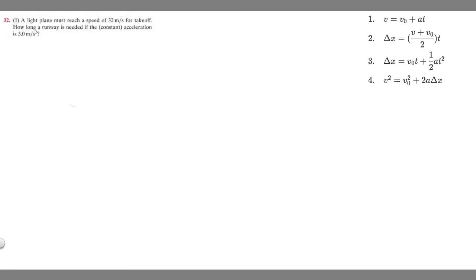We're told a plane must reach a speed of 32 meters per second. If we imagine a plane here traveling, for it to take off it has to reach 32 meters per second. So that means we know our final velocity is going to be 32 meters per second.